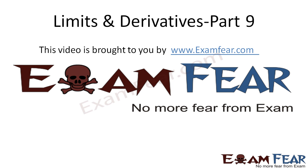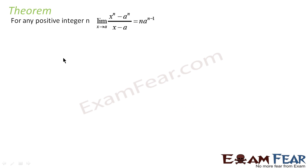Hello friends, this video — Limits and Derivatives Part 9 — is brought to you by examfear.com, no more fear from exam. Before watching this video, please make sure that you have watched Part 1 to Part 8. So we have to prove that for any positive integer n, the limit of (x^n minus a^n) divided by (x minus a) is n·a^(n-1).